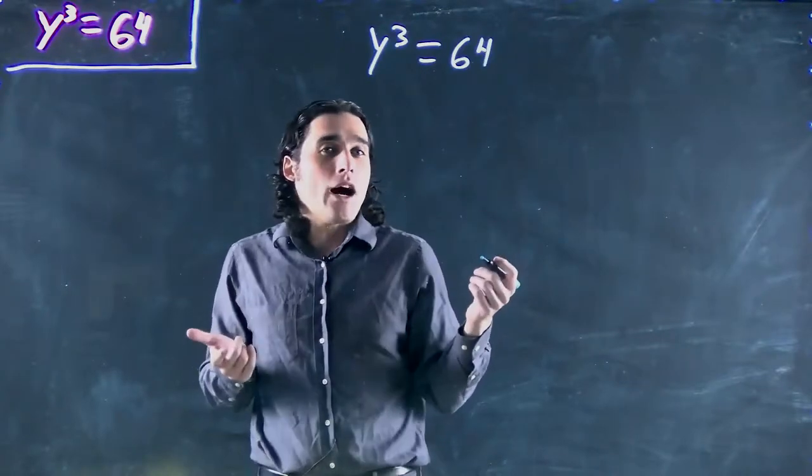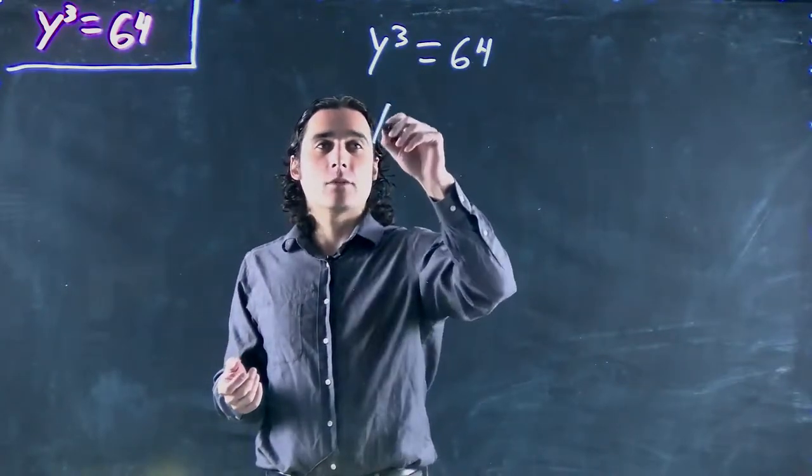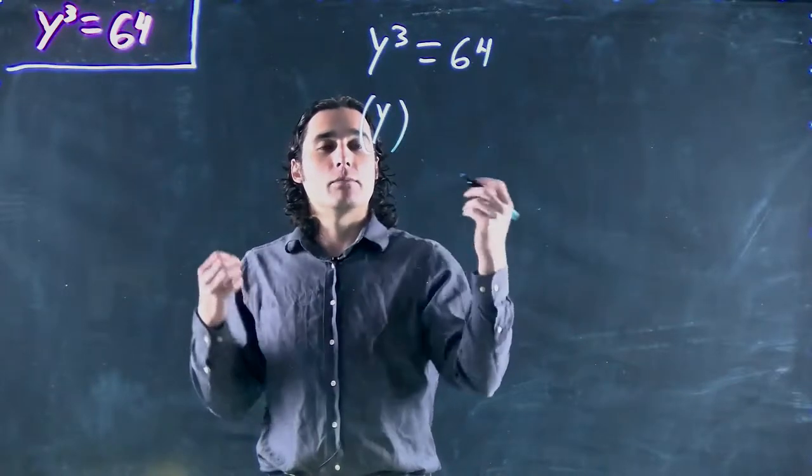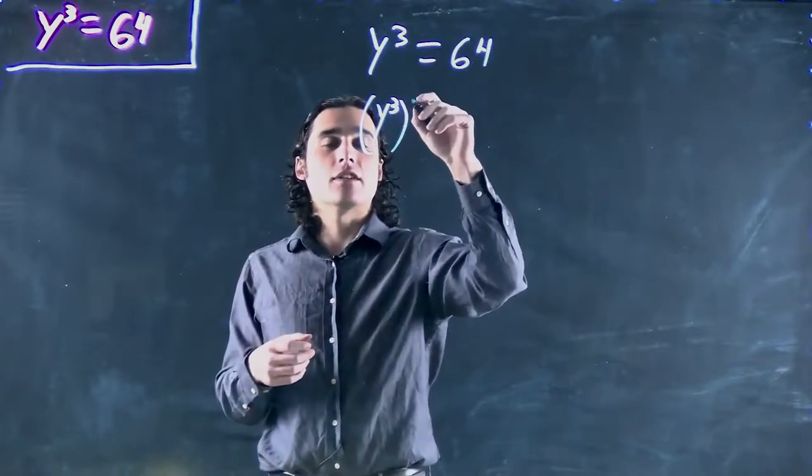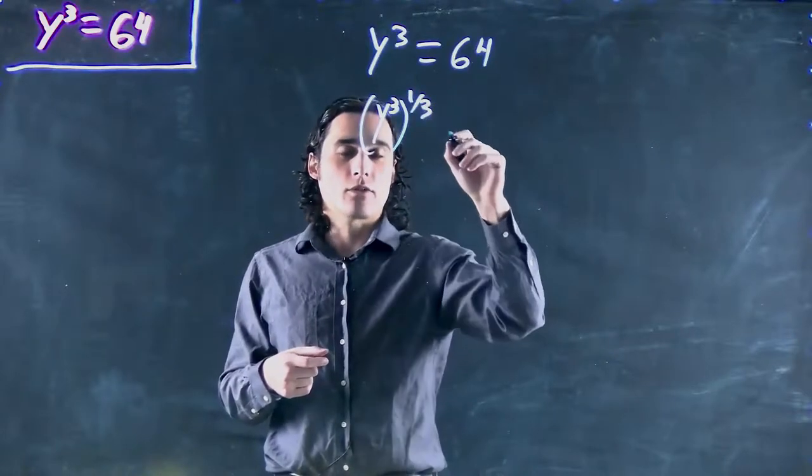So if we want to get y and solve for it, remember we have to multiply or put both sides to the inverse of the exponent. So put both sides to 1 over 3.